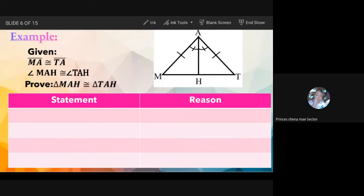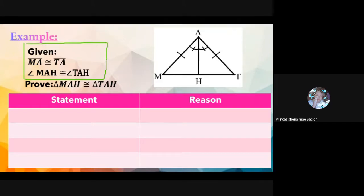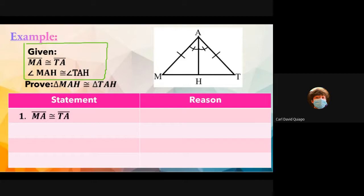What will be our first statement? Always look at the given first. Kya answers: side MA is congruent to side TA. The reason: Barbie answers, from the given. The reason is 'given.' Always look at the given for the first statements.